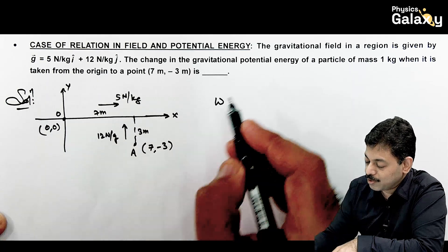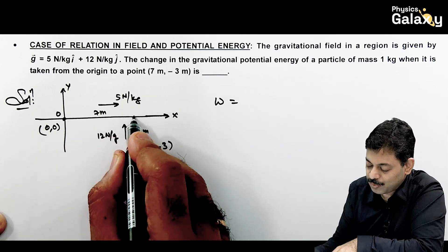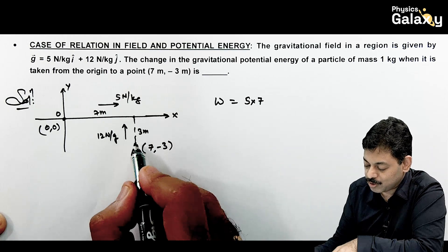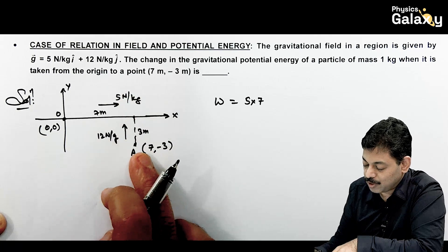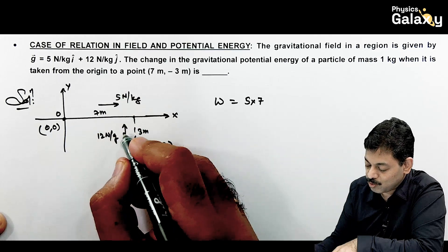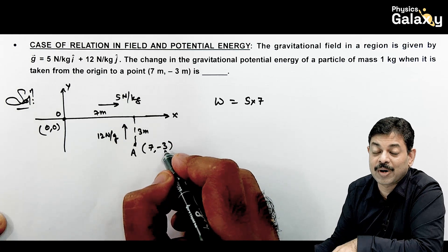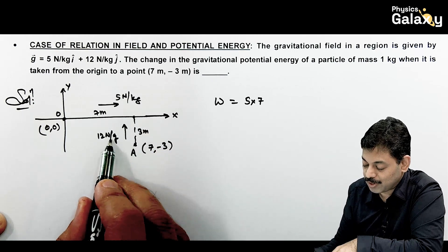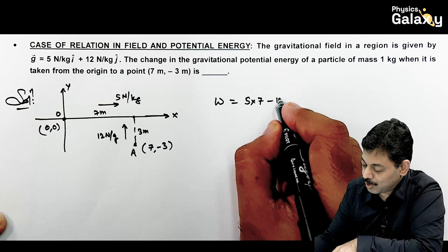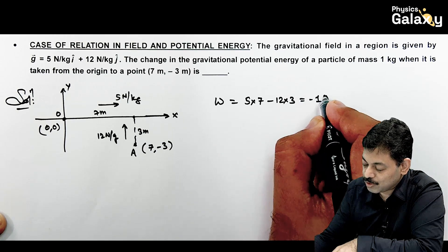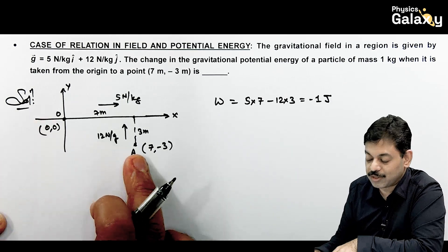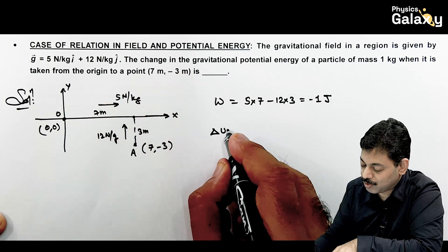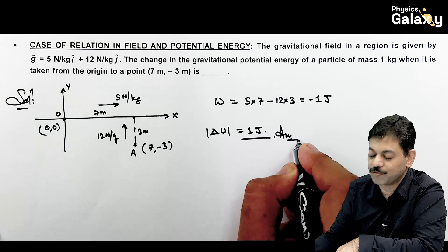Along the x direction, the particle moves 7 meters, so work done is 5 × 7 = 35. In the y direction it moves −3 meters (opposite to field), so work done is 12 × (−3) = −36. Total work done = 35 − 36 = −1 J. Therefore the change in potential energy ΔU = −1 J, and its magnitude is 1 joule.